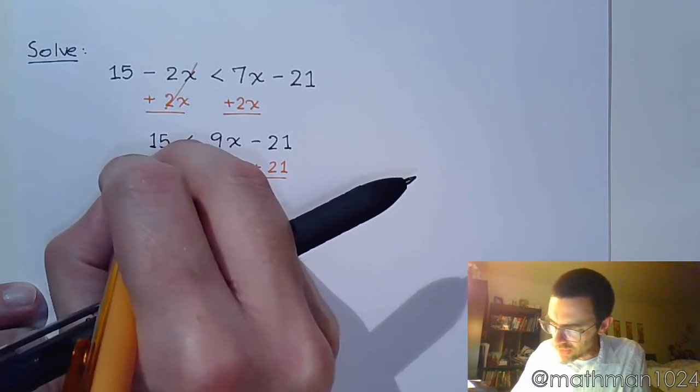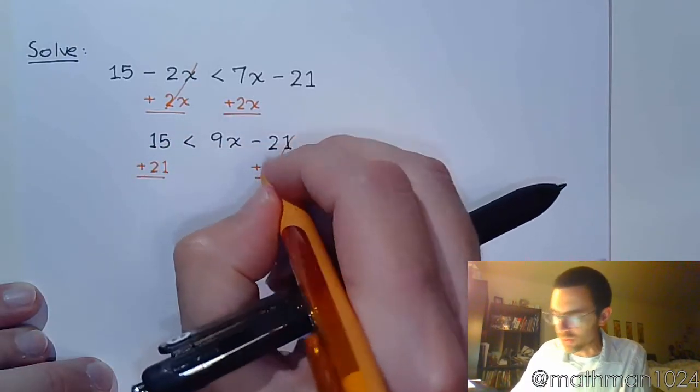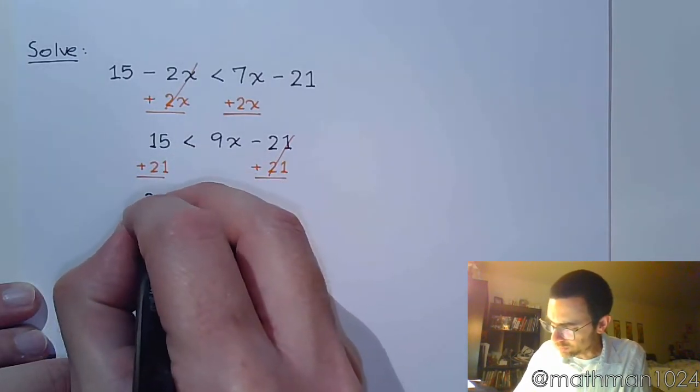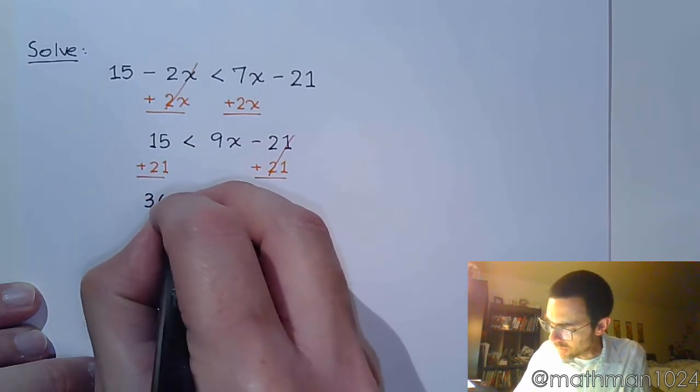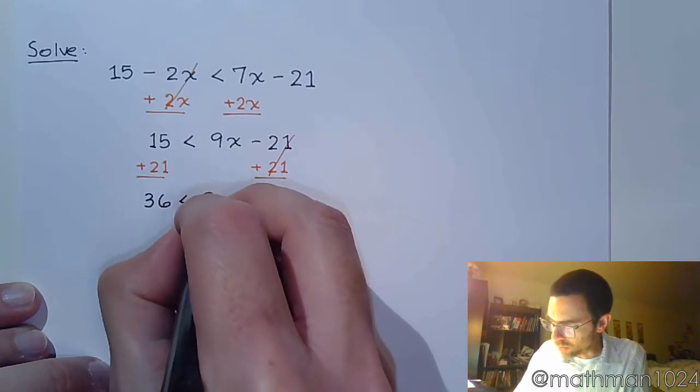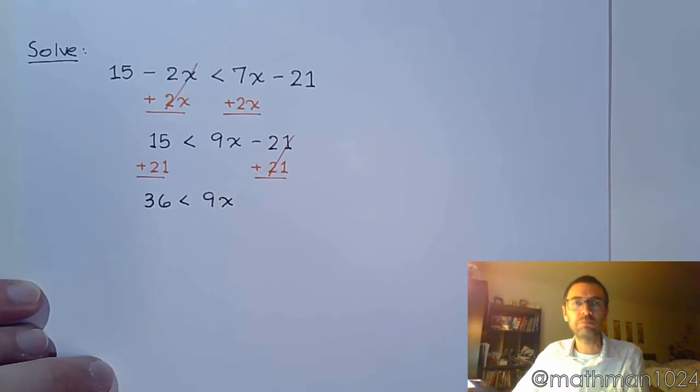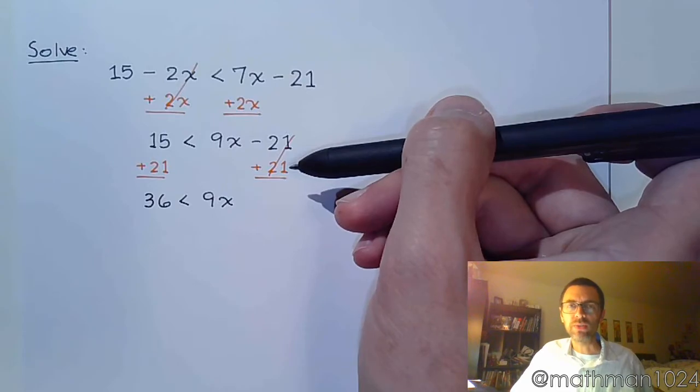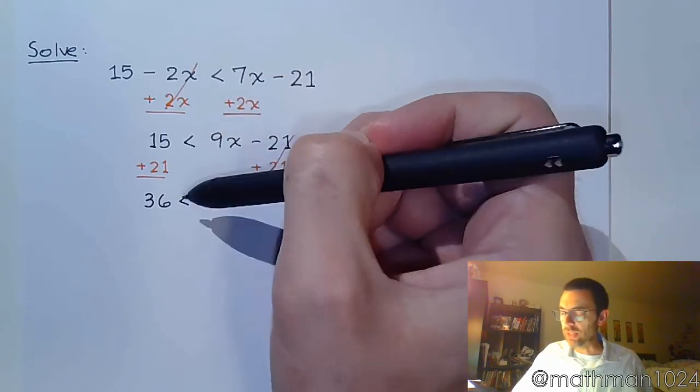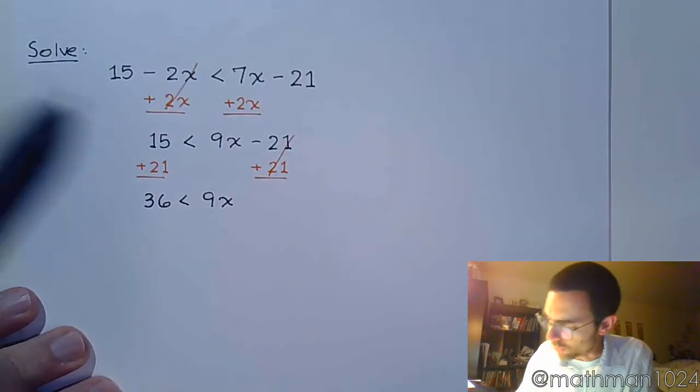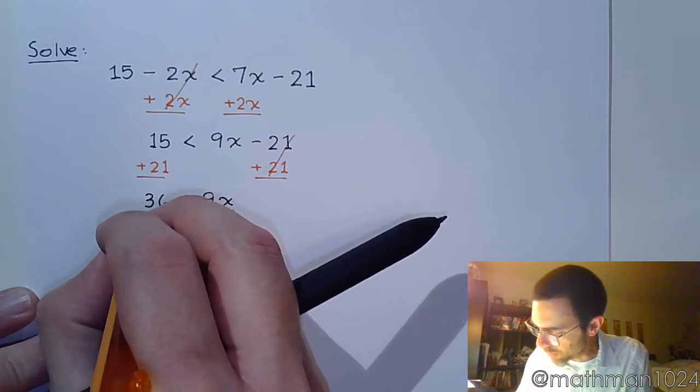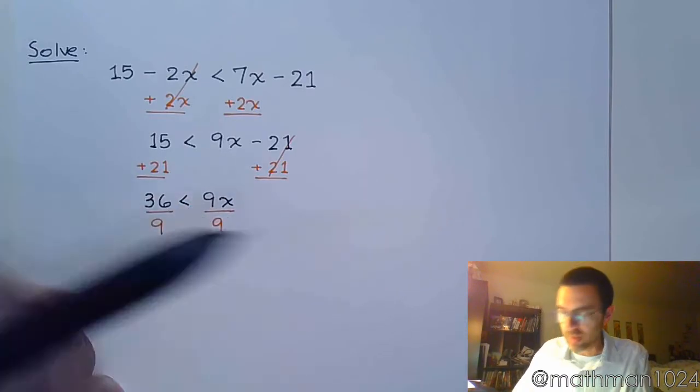We have 15, this is still going to be less than because I'm not multiplying or dividing by negative. Then I need to move the 21 to the other side. There's really nothing different here from what you've done with linear equations. The only time you have to really be concerned is if you end up multiplying or dividing by a negative. So adding 2x or adding 21 is not cause for changing the direction of the inequality, so it stays as less than.